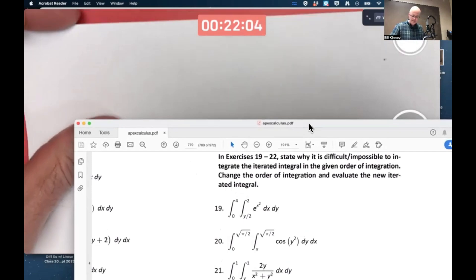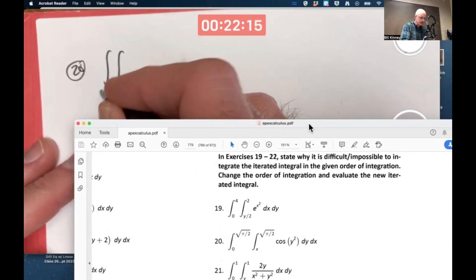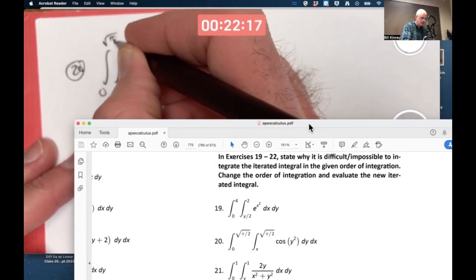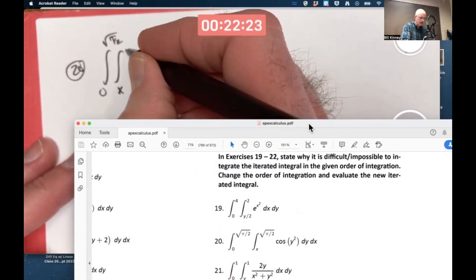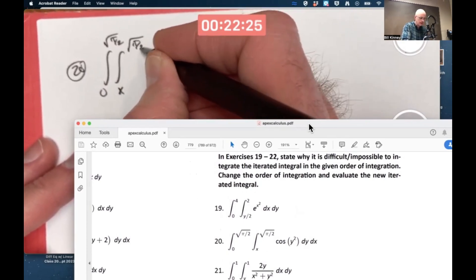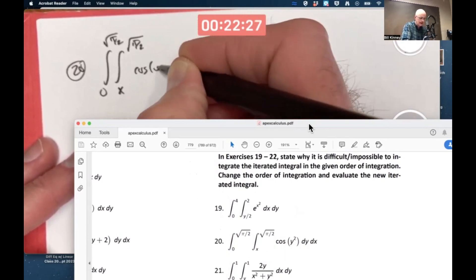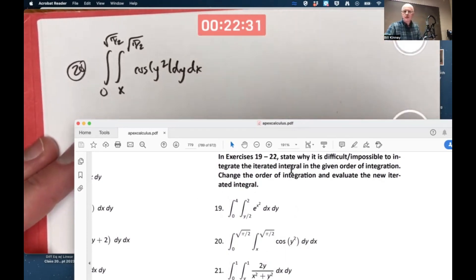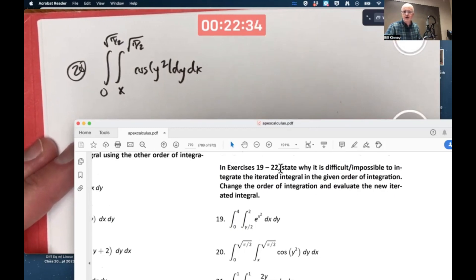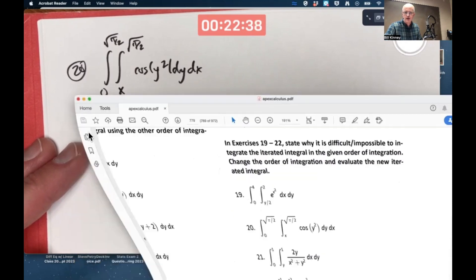So in problem 20, the outer integral x goes from zero to square root of pi over two, for the inner integral y goes from x to square root of pi over two, cosine y squared dy dx. It says it's impossible to do the iterated integral given this order, then change the order of integration and evaluate the new iterated integral.